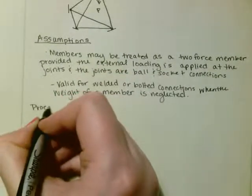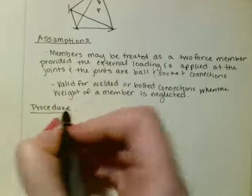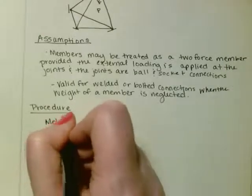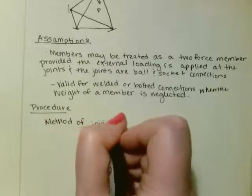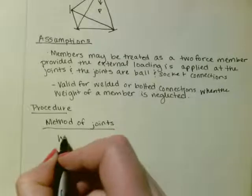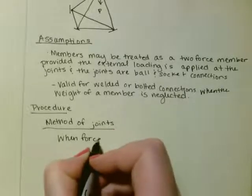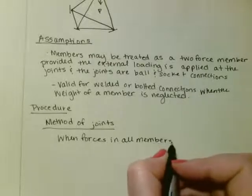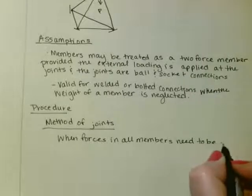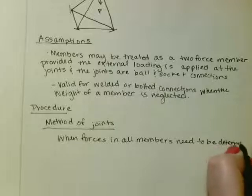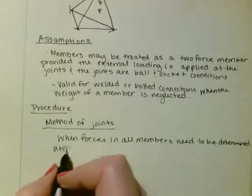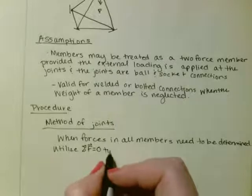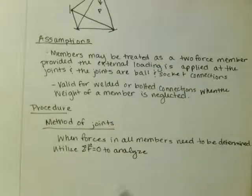So the procedure for analysis for this, same thing as with a 2D truss, you've got the method of joints. And you want to use this one when forces in all the members need to be determined. And for these, you want to utilize sum of the forces equal to zero to analyze.